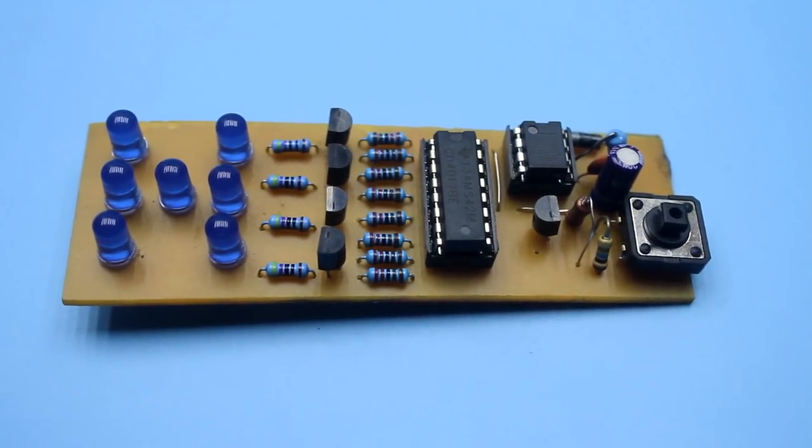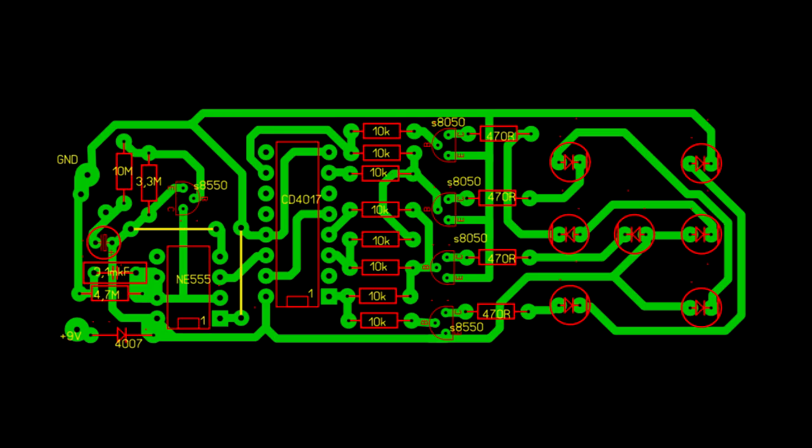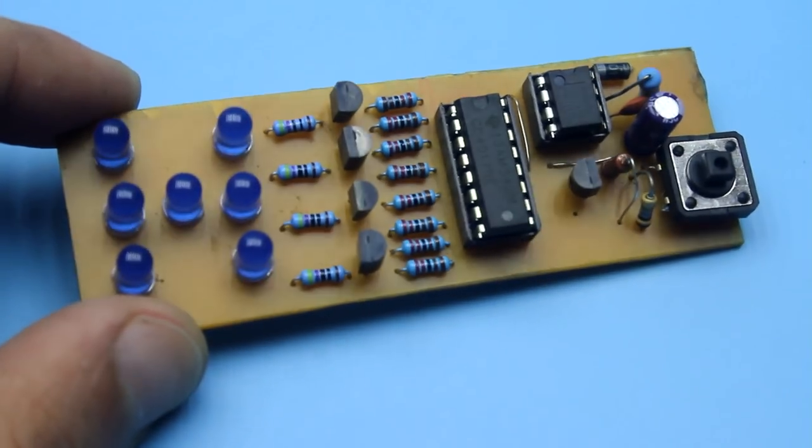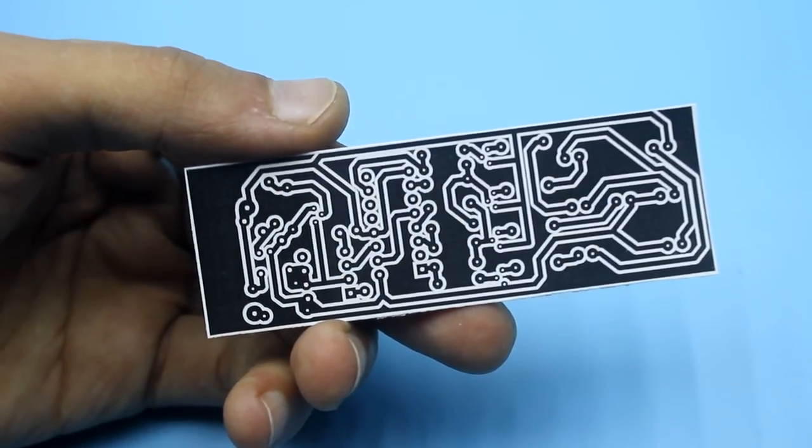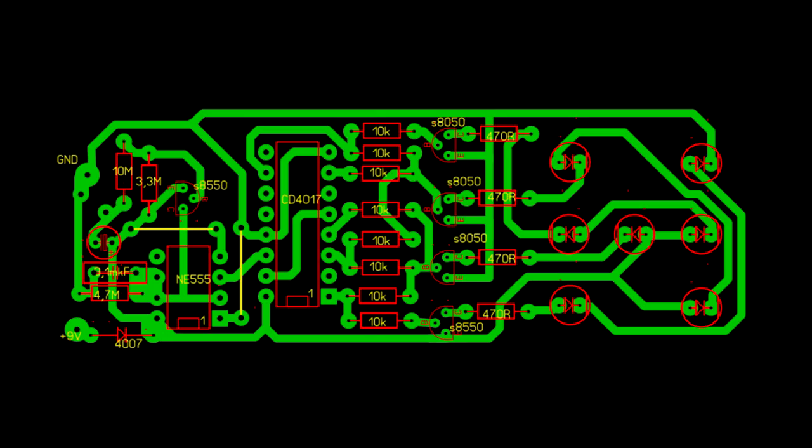About the installation and used components. When assembling, pay attention to the presence of two jumpers on the board, as well as the correct installation of LEDs. Mount the LEDs and all the other components according to the inscriptions on the board.